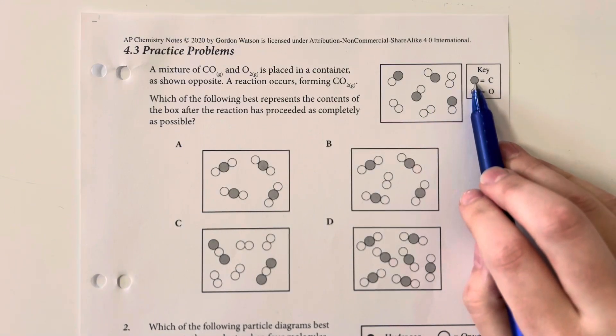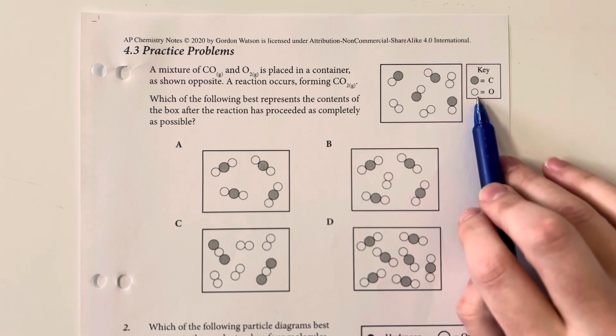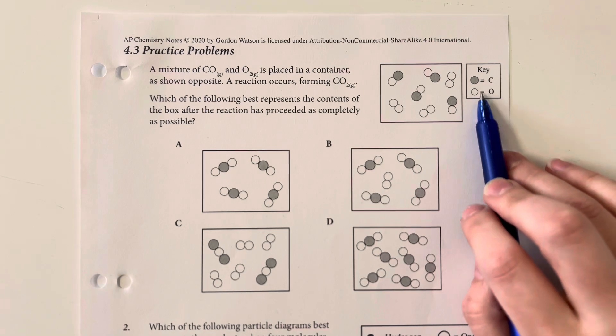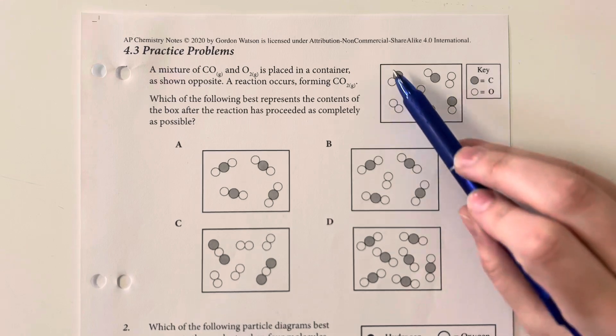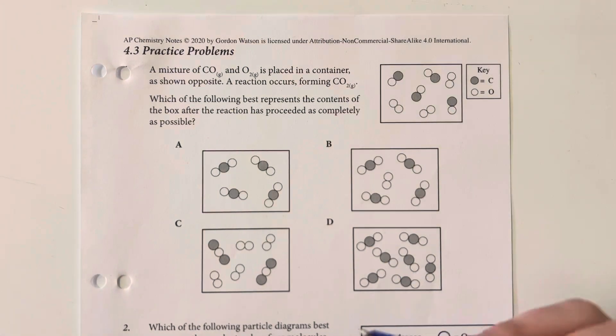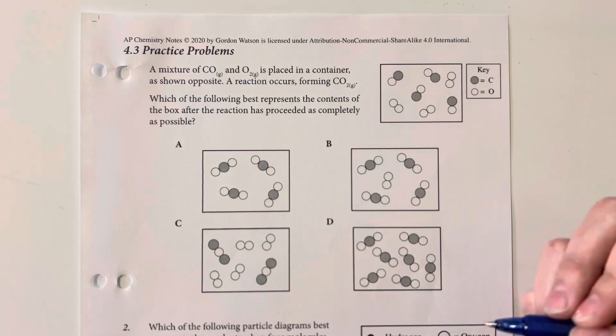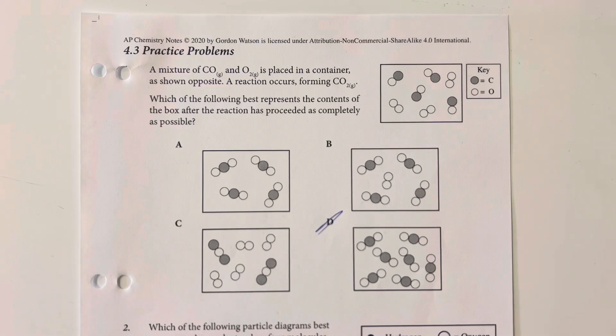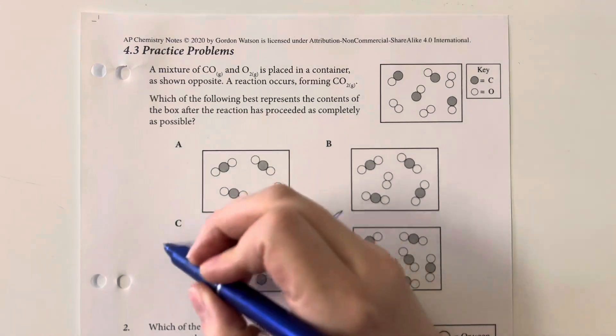So the dark circles are the carbons, the light circles are the oxygens, and we have four carbons. So we should eliminate anything where we don't have four carbons, that would be D. And we should also eliminate anything where the main product is not carbon dioxide, that would be option C.